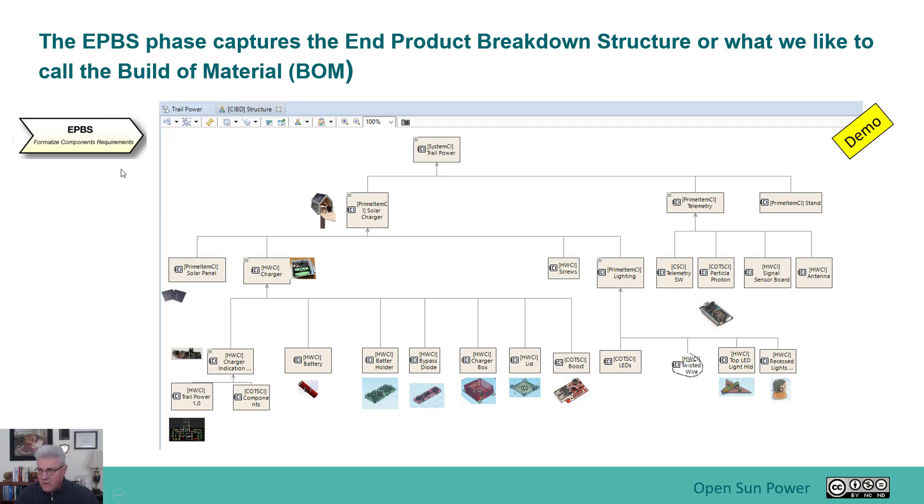It shows that I have this thing called Trail Power, and Trail Power is basically broken down into a number of what we would call prime items. I've got the solar charger, I've got the telemetry system, and I have the stand. Here's just the top part would be the charger, and then the prime item is broken down into pieces also. You can see the prime item has solar panels, it has this charger box, and it has some screws, and it also has some lighting, so the whole lighting system is part of this prime item.